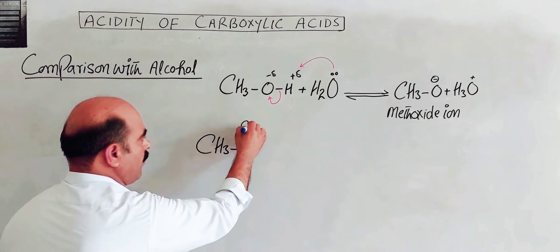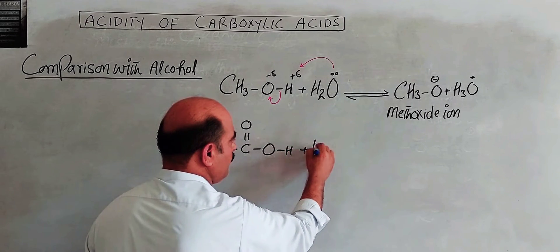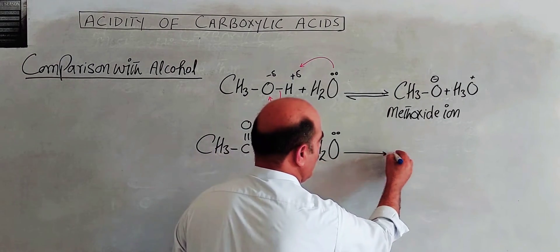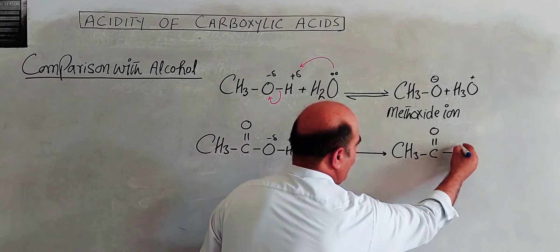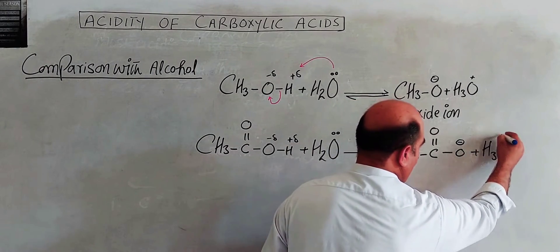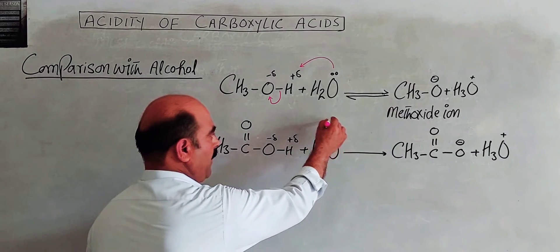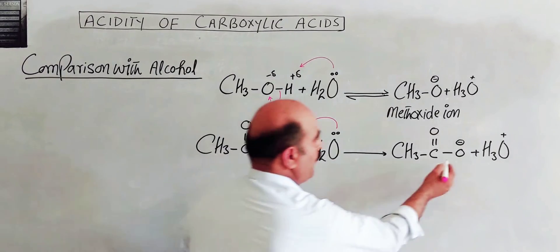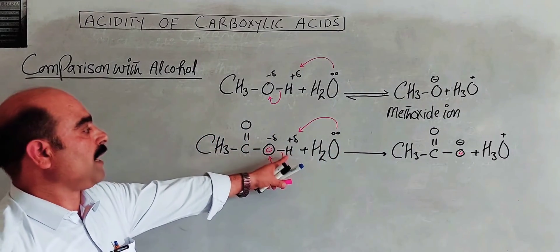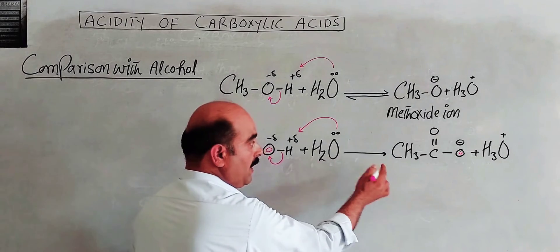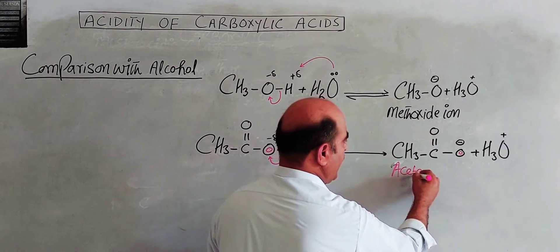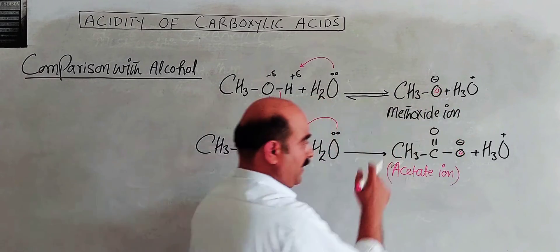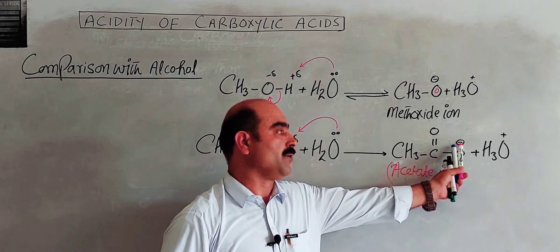Now for acetic acid: CH3COOH plus water. The lone pair electrons on oxygen of water attack the partial positive hydrogen of the hydroxyl group of acetic acid. The bond breaks heterolytically, and oxygen gets the full negative charge. The hydrogen ion is released — it is the proton, the acid — and water is the base accepting the proton. The product CH3COO⁻ is called the acetate ion. The acetate ion has resonance, and the negative charge is delocalized over the two oxygen atoms.